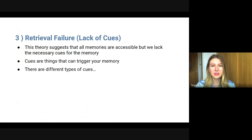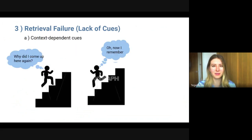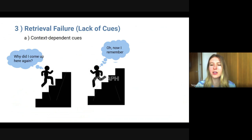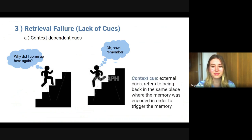There are two different types of cues related to retrieval failure. The first is context-dependent cues. Have you ever gone upstairs to complete a task, got there and thought 'why have I come here?', then gone back downstairs and remembered? That is an example of a context cue. Context cues are external cues — they refer to being back in the same place where the memory was encoded, which allows that memory to be triggered.